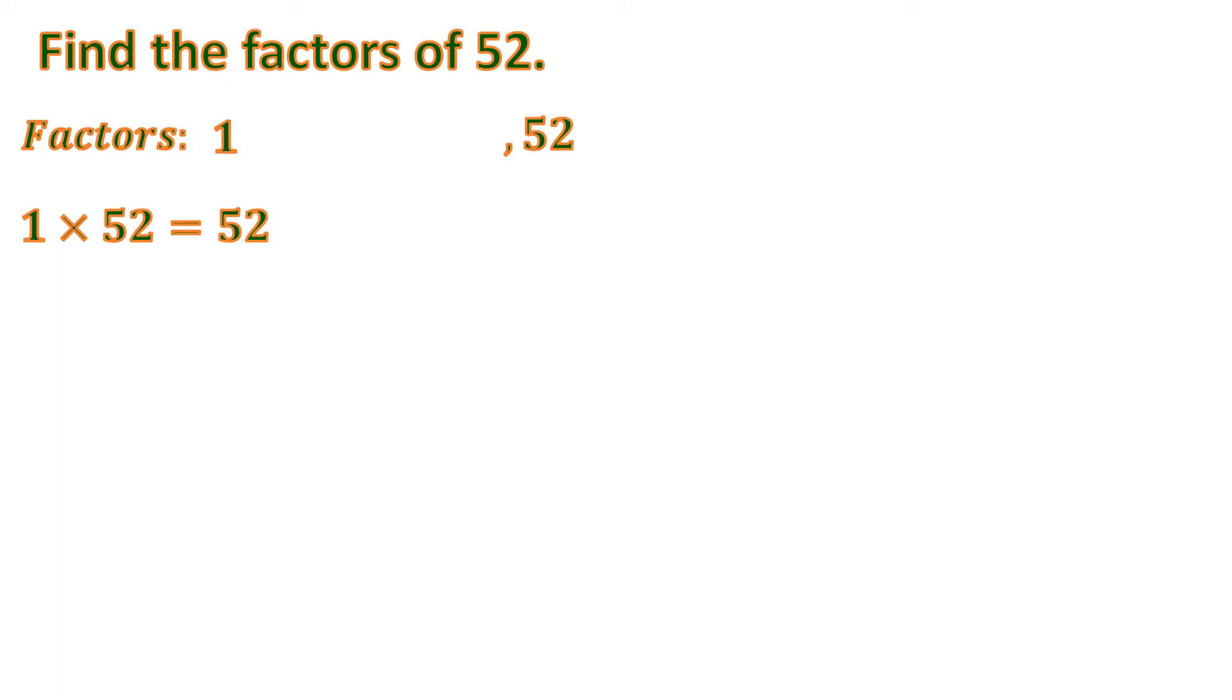And obviously, 52 must be the biggest, because that's the given number. And the given number is the biggest, of course, as a factor. Now let's find the other factors. So let's try 2. So 2 times what to get 52? So to know that, we will divide 52 divided by 2. So we have 2, because 2 times 2 is 4, and then subtract.